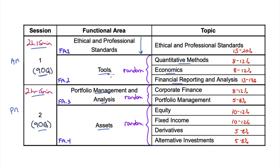Functional area two, the tools, will also be randomized within that area. That means you may get a quant question followed by an FRA, followed by a quant, followed by economics, followed by another economics, followed by a quant, and so on. They'll only be randomized within their functional area.